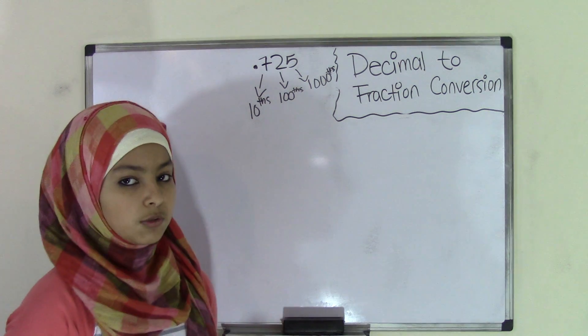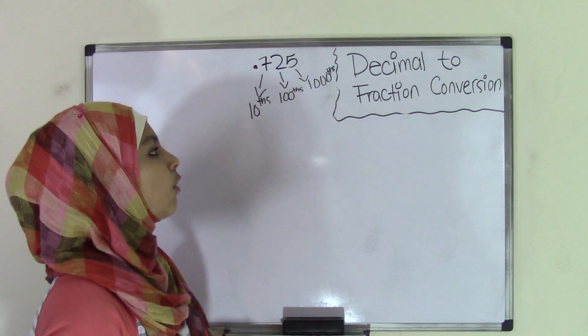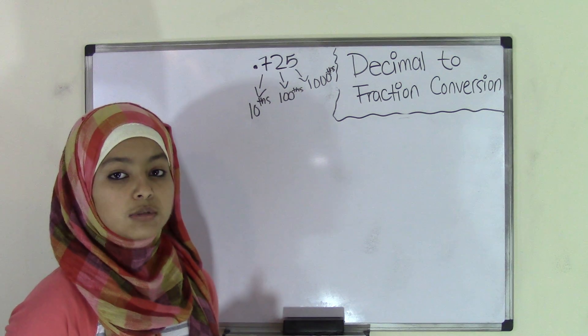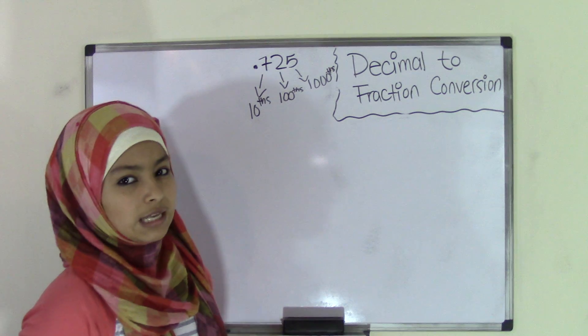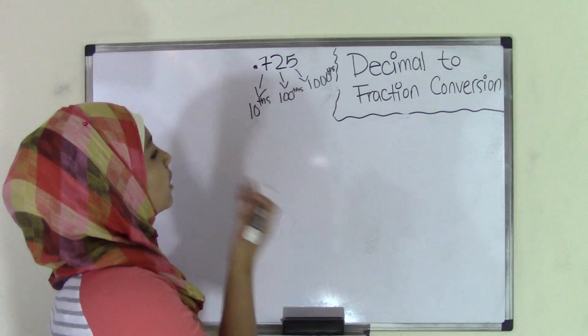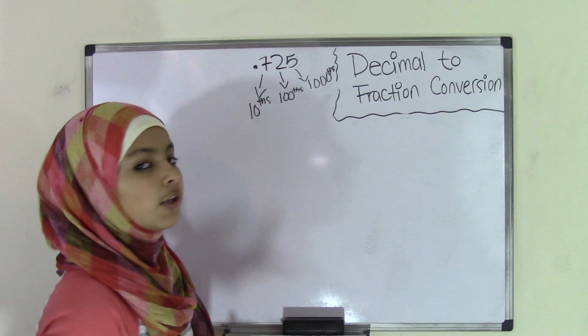Now, in this case, it only goes up to a thousandth, but it can even go further into ten thousandths and hundred thousandths. But usually in sixth grade, you only go up to thousands or maybe ten thousandths. So this is just an example to show you what the place values are.